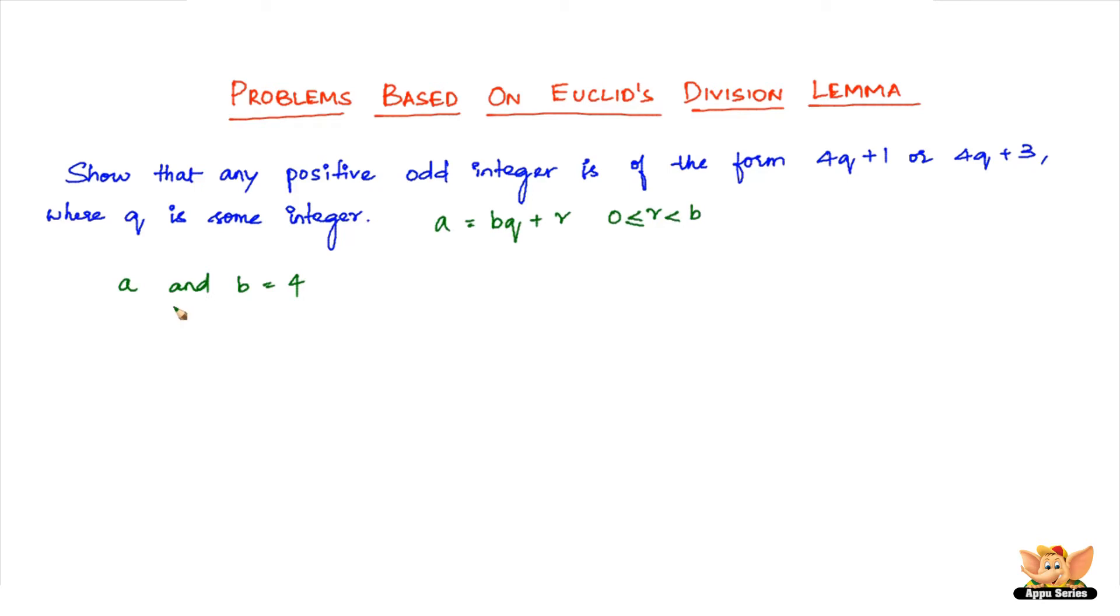If A is any odd positive integer and B is 4, by division lemma there exist integers q and R. Substituting these values, we get A = 4q + R. Here R is greater than or equal to 0 and less than 4.